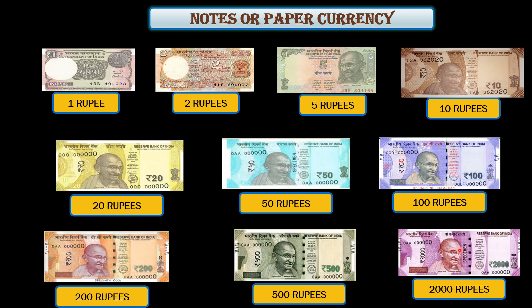These are the 10 different notes on your screen which we use in India, and they are called paper currencies. Once again: 1 rupee, 2 rupee, 5 rupees, 10 rupees, 20 rupees, 50 rupees, 100 rupees, 200 rupees, 500 rupees and 2000 rupees. These are the notes printed on paper and they are called paper currency.